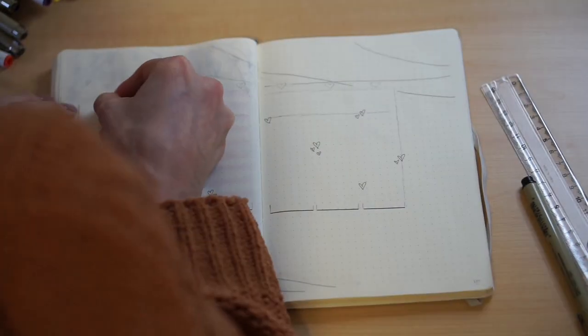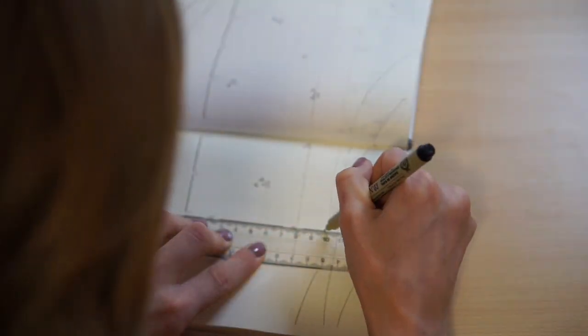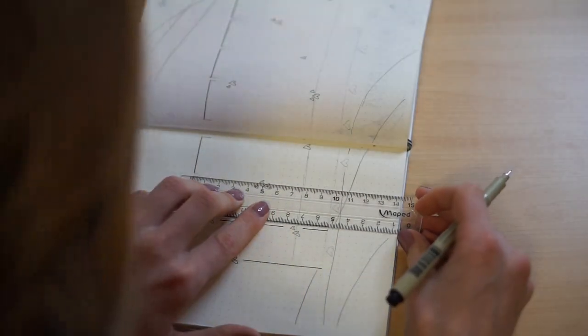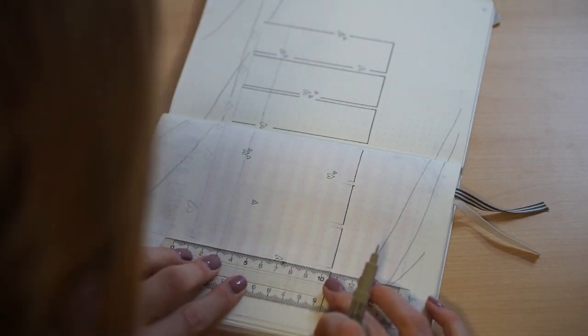I'm just creating my seven rectangles. So I have each day of the week sectioned off for me to write different tasks and events that I have going on.